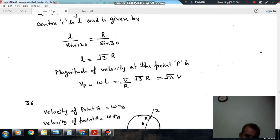So we put value of ω as V/R and L as √3R, so we can get the velocity of point P.